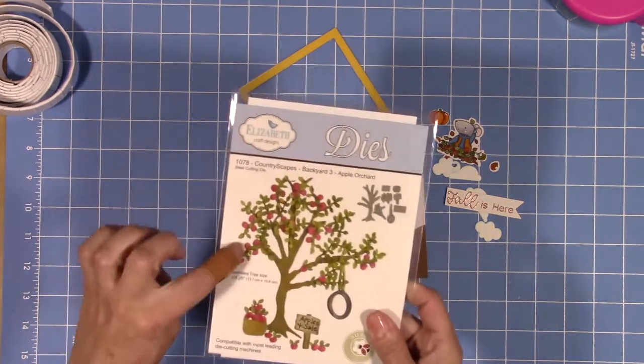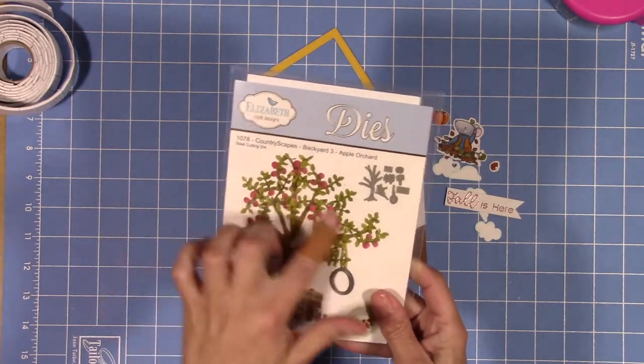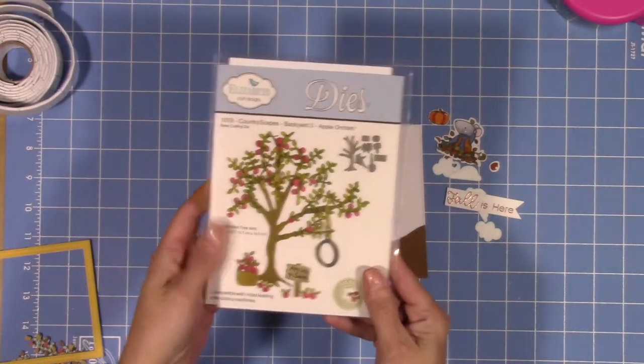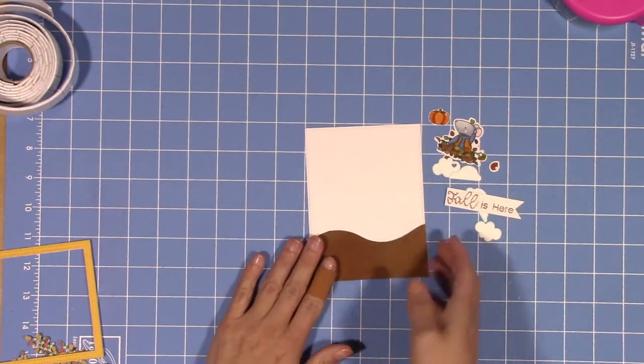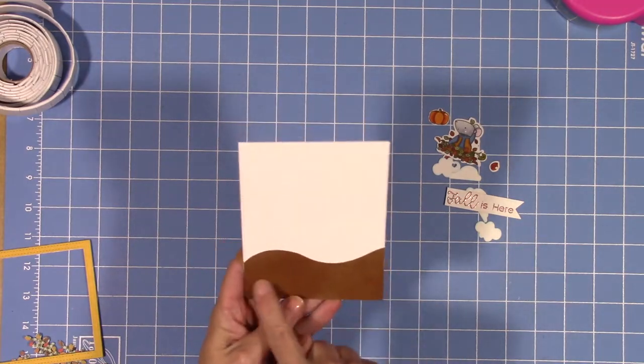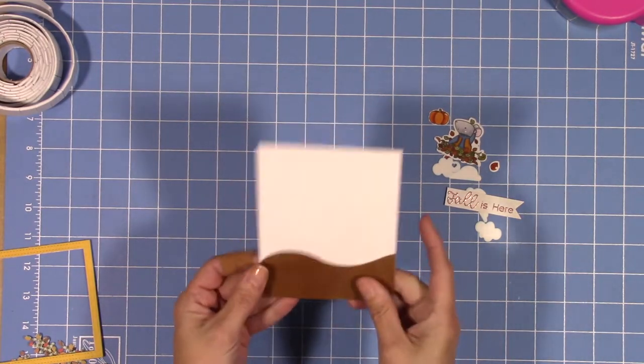I'm also going to be using the tree again from Elizabeth Craft Design, along with the stitched rectangle dies and a square die for the other card.